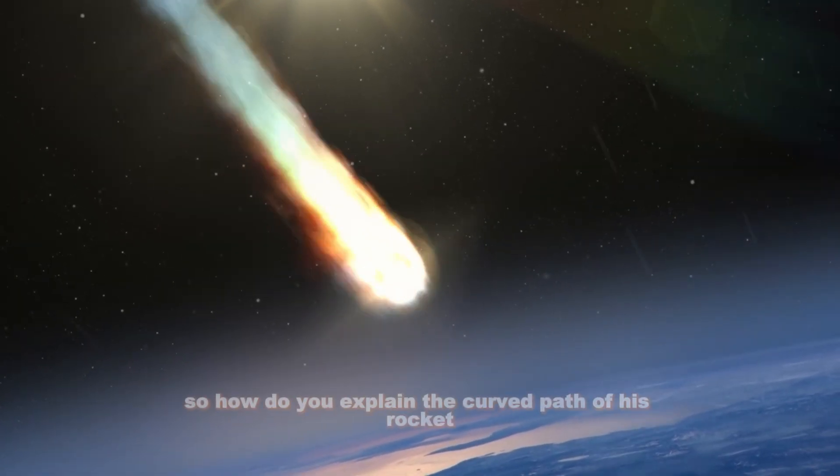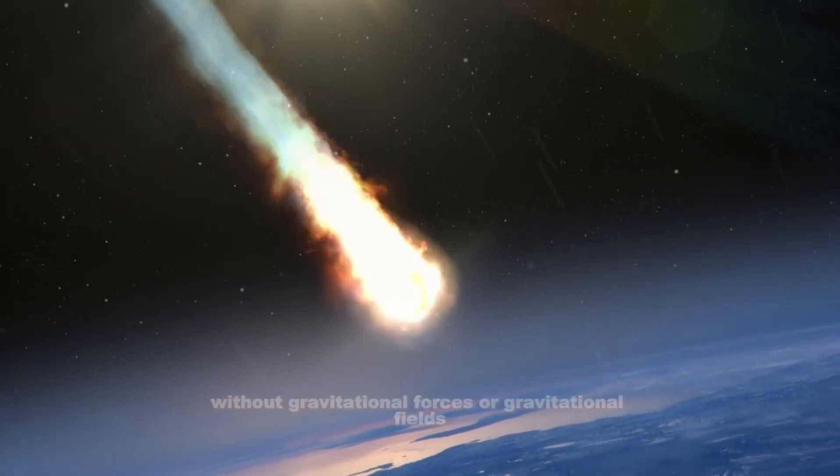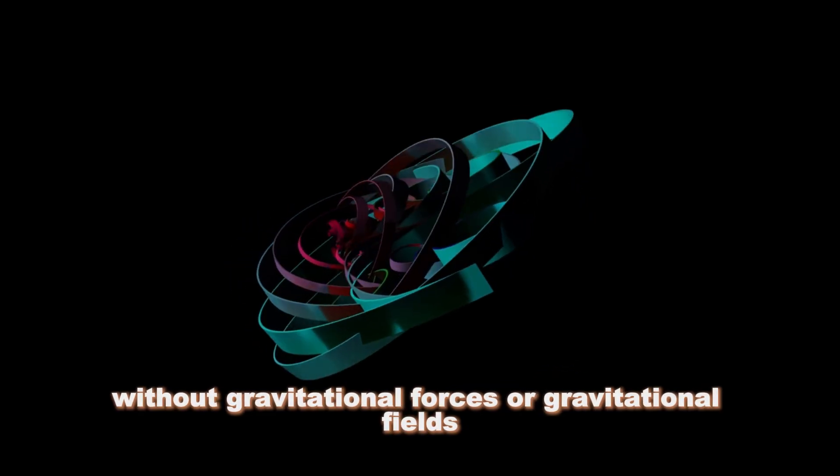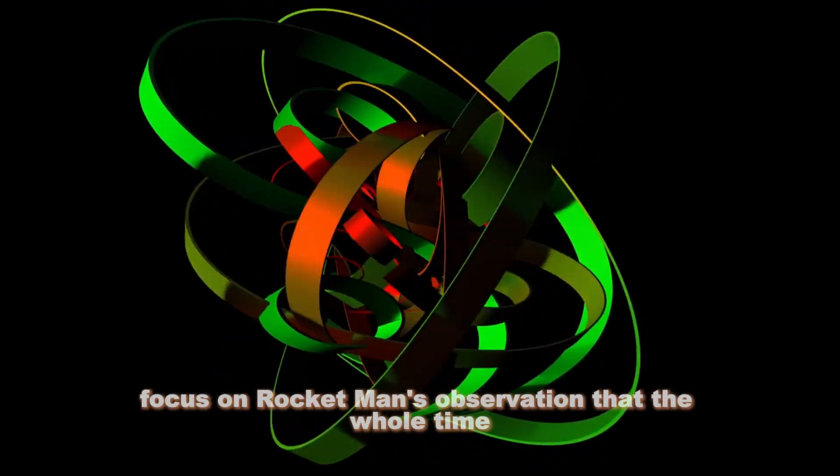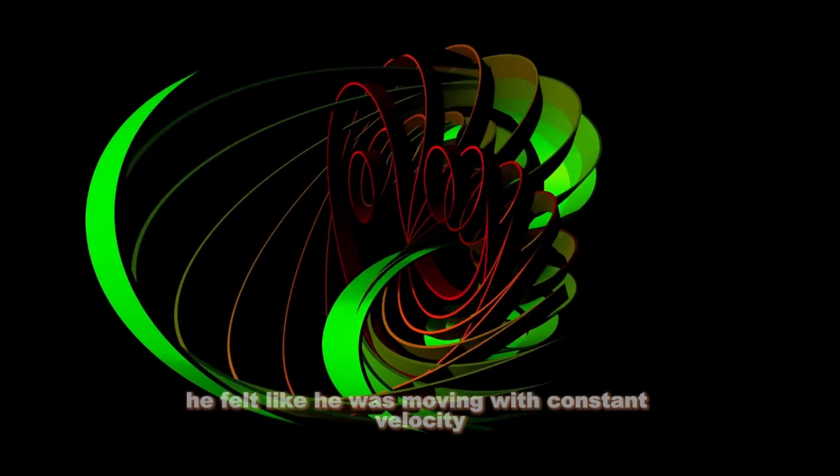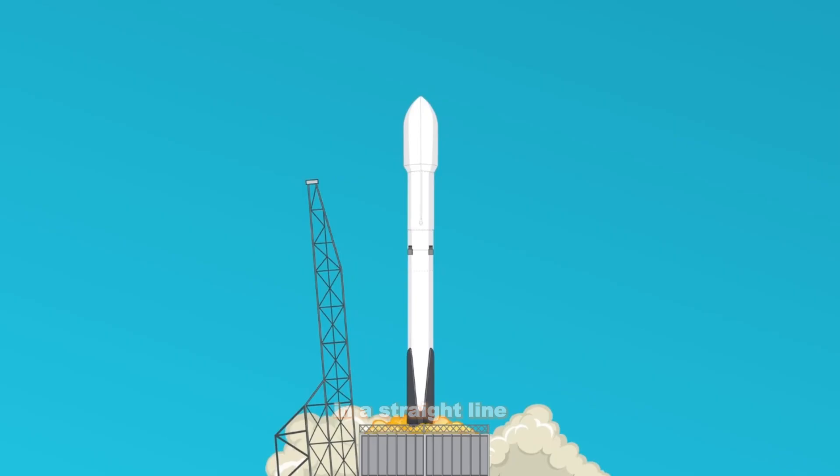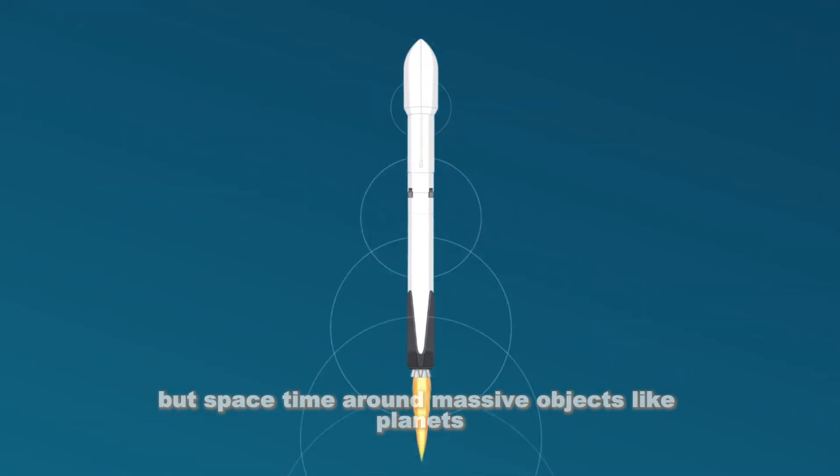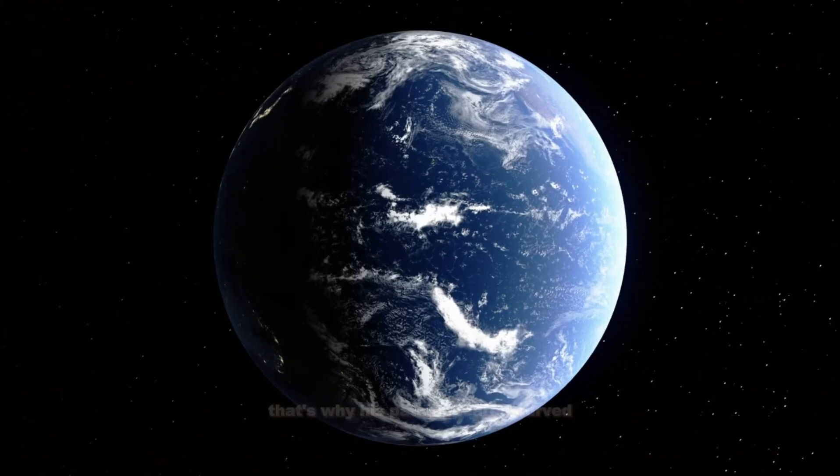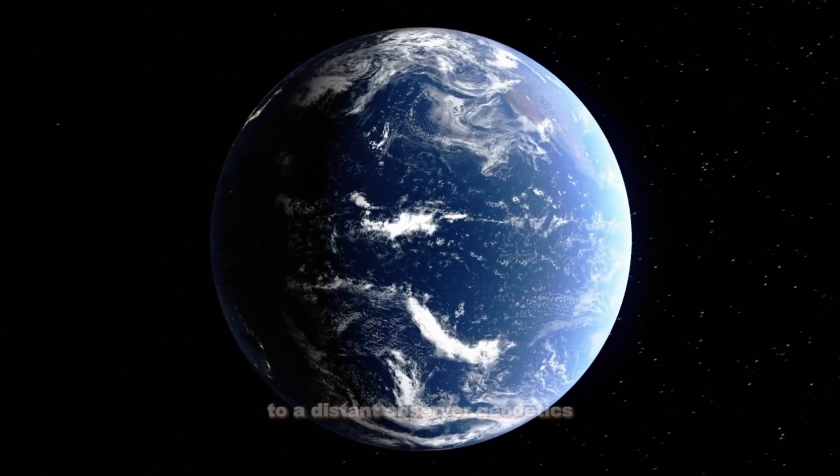Okay, so how do you explain the curved path of his rocket without gravitational forces or gravitational fields? The answer is curved spacetime. First, focus on Rocketman's observation that the whole time he felt like he was moving with constant velocity in a straight line. He was moving in a straight line through spacetime, but spacetime around massive objects, like planets, is curved. So that's why his path appeared curved to a distant observer.